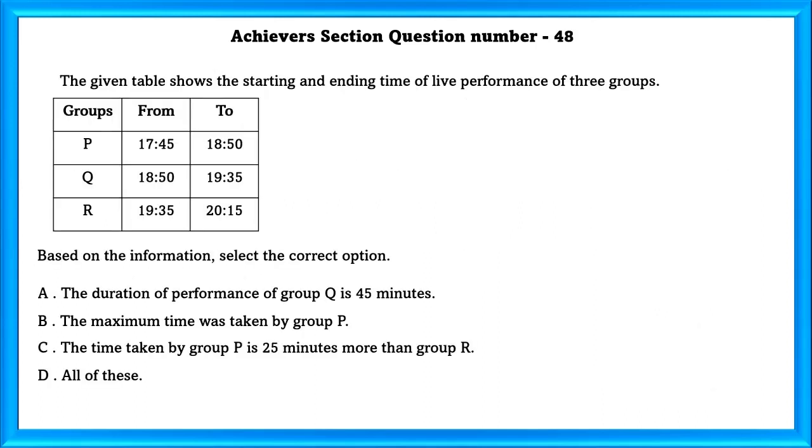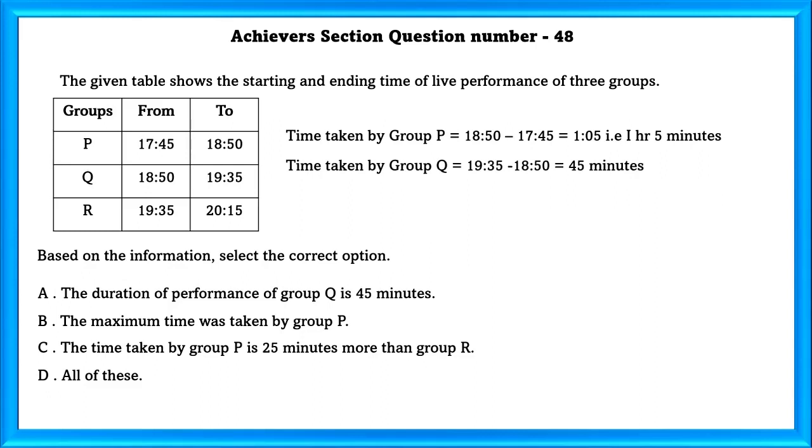Achiever section question number 48. The given table shows the starting and ending time of live performance of 3 groups. Based on the information, select the correct option. Now we will calculate the time taken by these groups. Time taken by group P is equal to 1 hour 5 minutes. Time taken by team Q is equal to 45 minutes. Time taken by group R is 40 minutes.